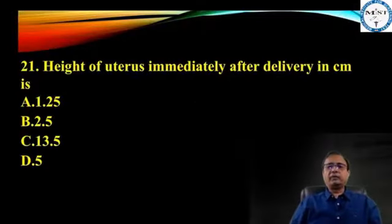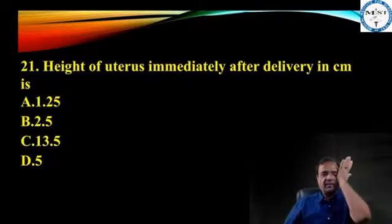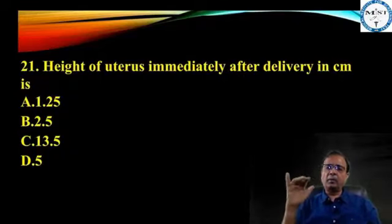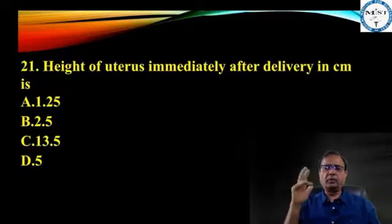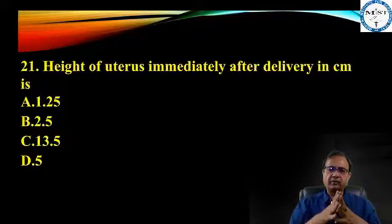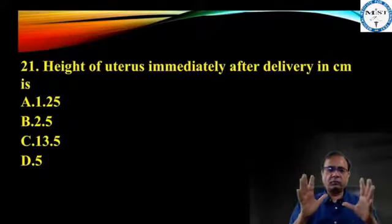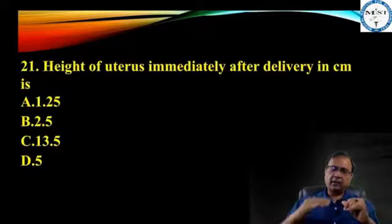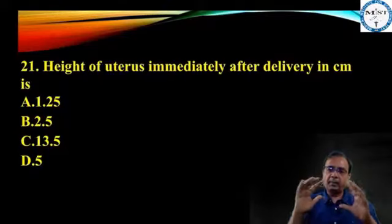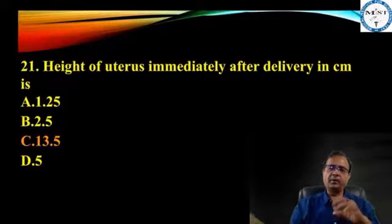Height of uterus immediately after delivery in centimetre is 13.5. It is at the lower border of the umbilicus, just below — corresponding to 20 weeks of pregnancy. Nothing happens in the first 24 to 48 hours. Thereafter, it reduces at the rate of approximately 1.25 to 1.5 centimetre per 24 hours.